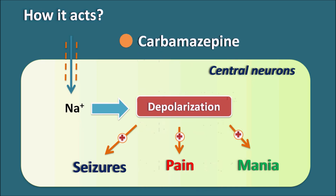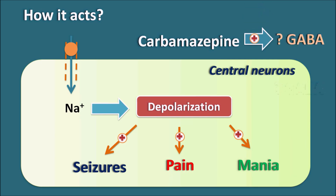Carbamazepine blocks voltage-gated sodium channels, thereby inhibiting the depolarization of central neurons and controlling seizures, pain, and the manic phase in bipolar disorder. Carbamazepine may also act by increasing GABA activity — GABA is an inhibitory neurotransmitter that can suppress mania in bipolar depressive patients. However, the main action of carbamazepine is attributed to the blocking of voltage-gated sodium channels.